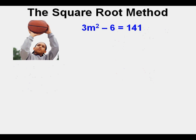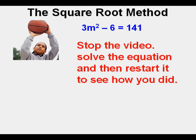Let's look at this problem: 3m squared minus 6 equals 141. Stop the video and solve the quadratic equation. After you've solved for m, restart the video to see how Joe did it.